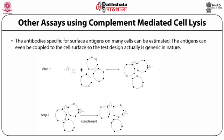Other isotypes can also be detected with an additional step before complement addition. The cells incubated with test antibodies are treated with heterologous anti-Ig of the complement activating class. Only those cells which had previous immunoglobulin bound will bind these second antibody molecules, and only those will be lysed upon addition of the complement.